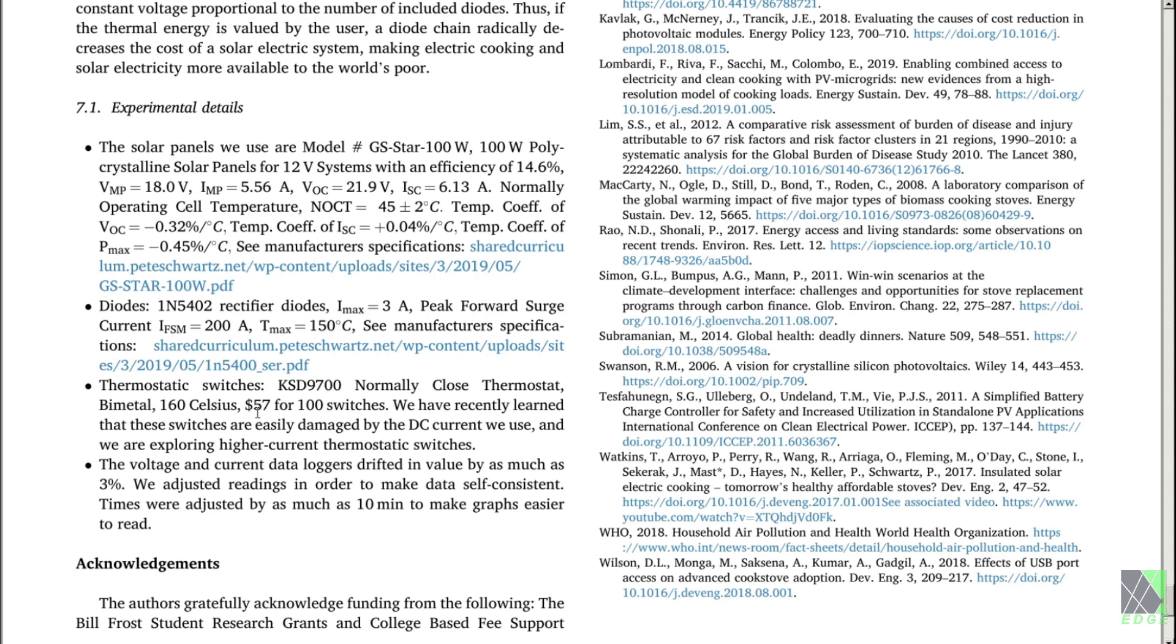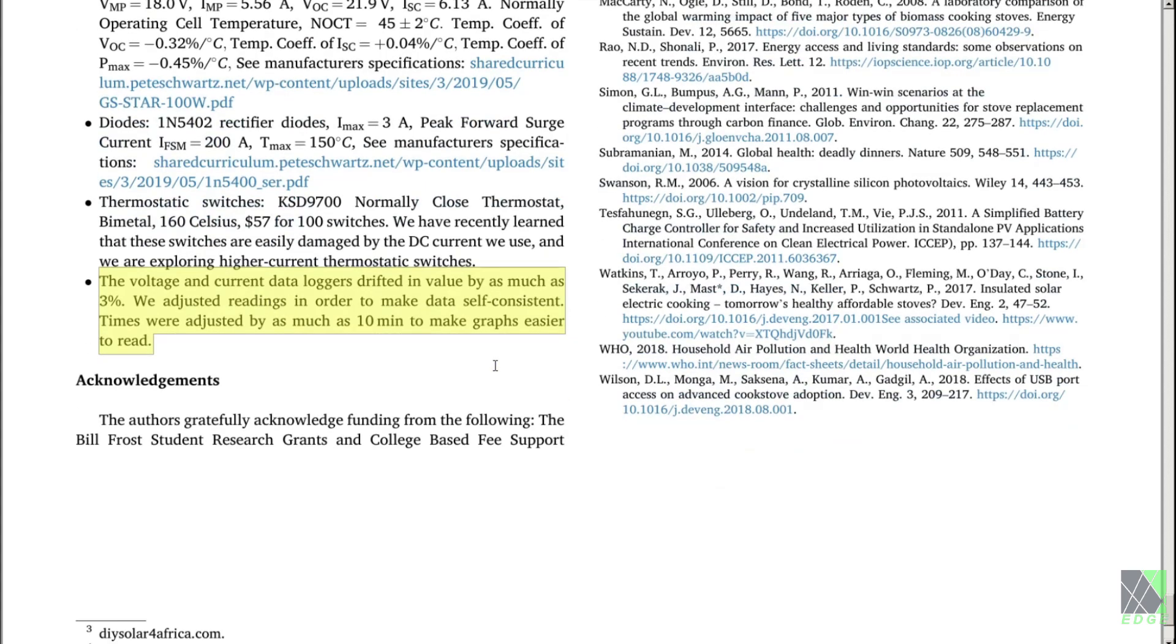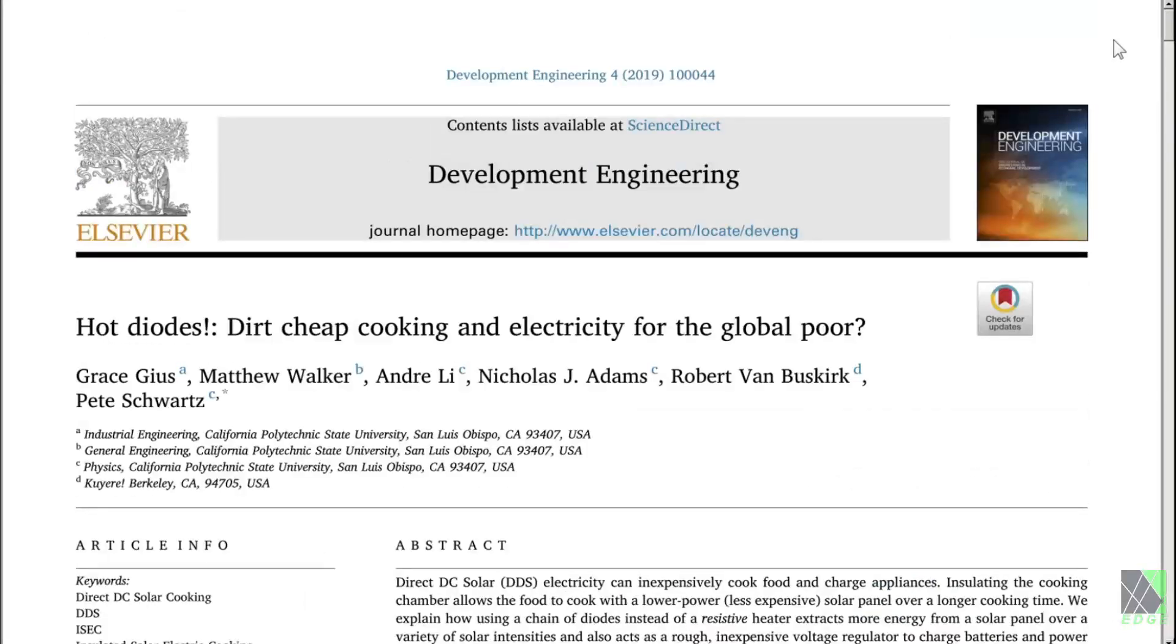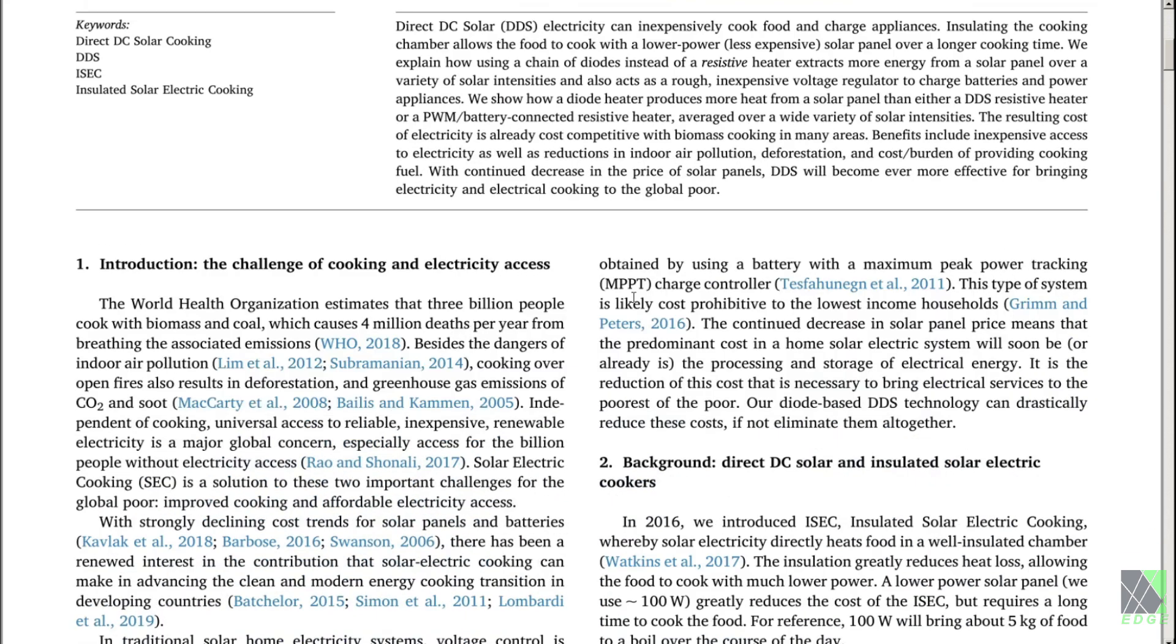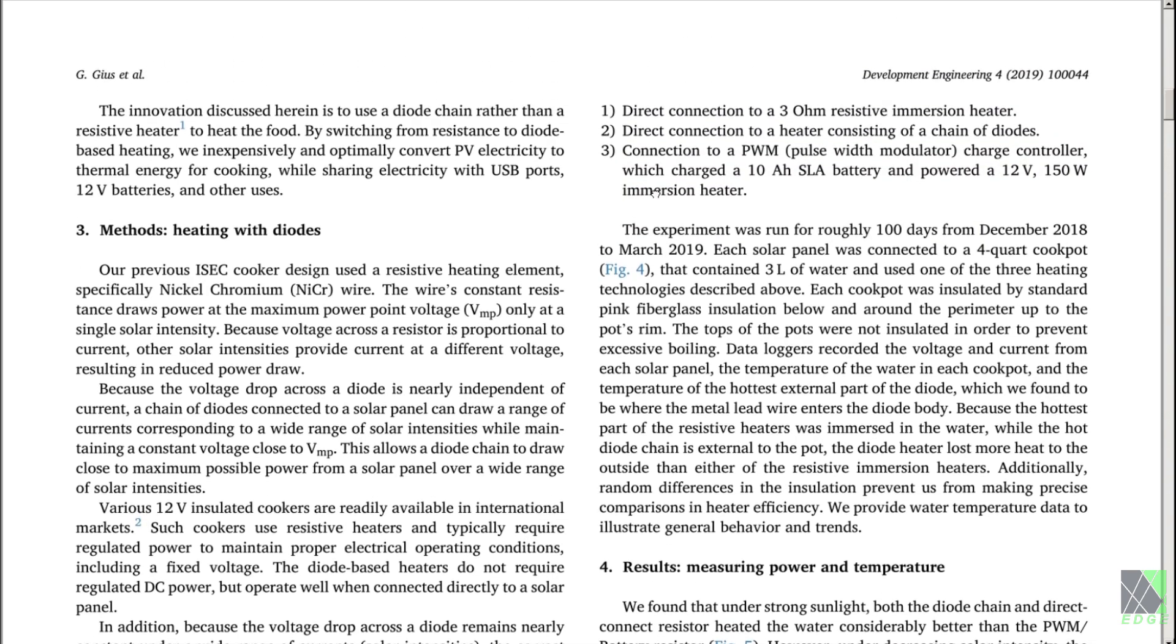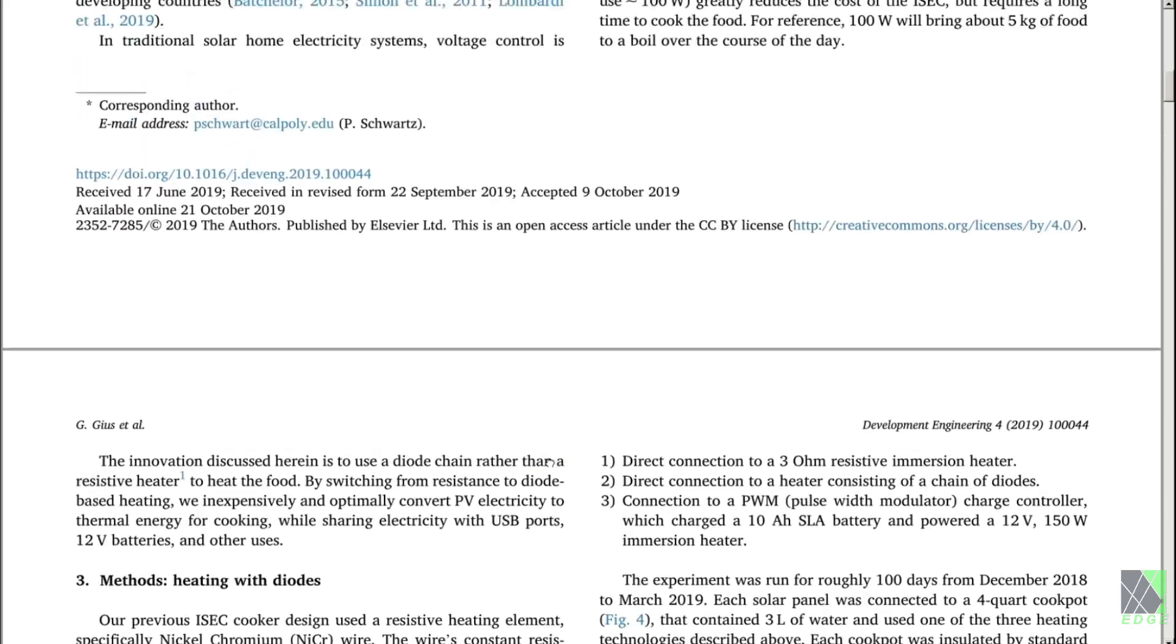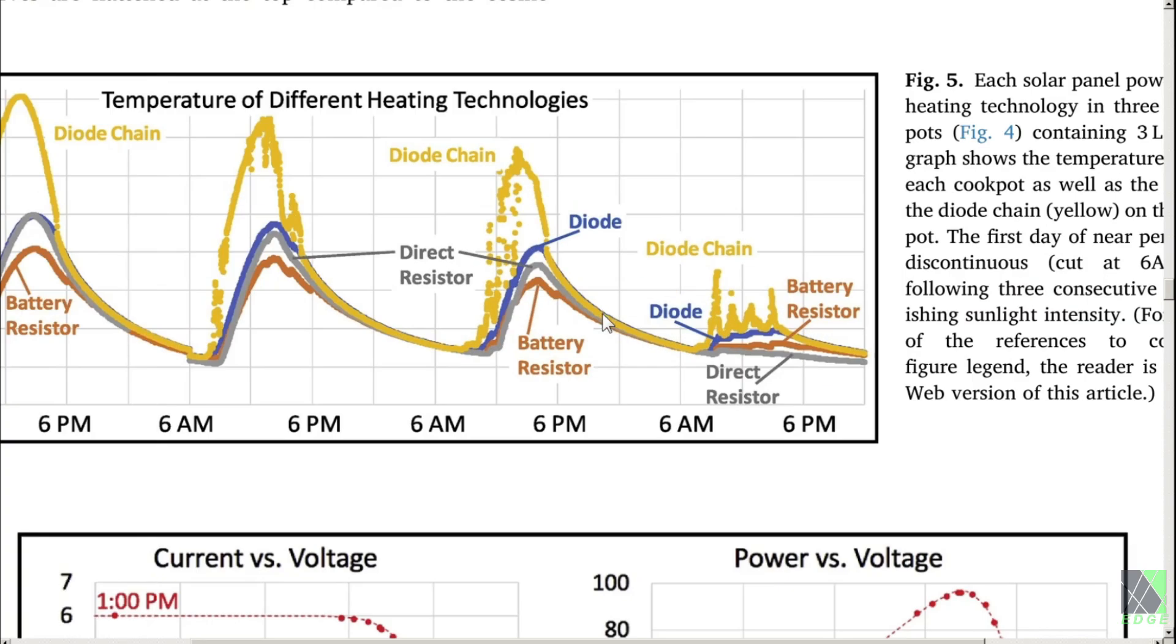They also here give you a list of the solar panels they're using, the exact model, everything. They are so detailed. It's phenomenal the amount of time they have to do this stuff. The thermostat, they use a thermostat. I never talked about a thermostat, but yes, you do need one. The voltage and current data loggers drifted in value by as much as 3%. We adjusted readings in order to make the data self-consistent. Times were adjusted by as much as 10 minutes to make the graphs easier to read. So they are excruciatingly detailed and straightforward in how they present this work. I'm very impressed. And again, this is one of my favorite papers. If you want to read this paper, it's all over Google. It's all over the internet. You can also Google for solar diode cooker. And this paper will come up as one of the different results. There are other papers, but I love this one. I think they did a fantastic job.